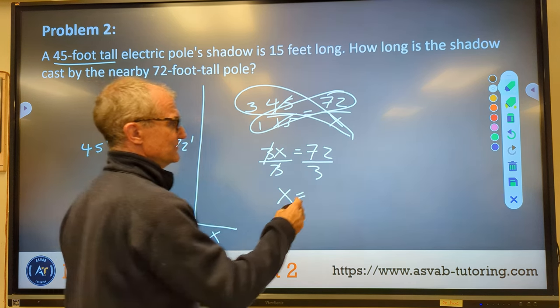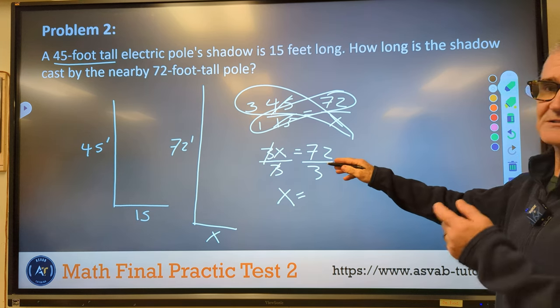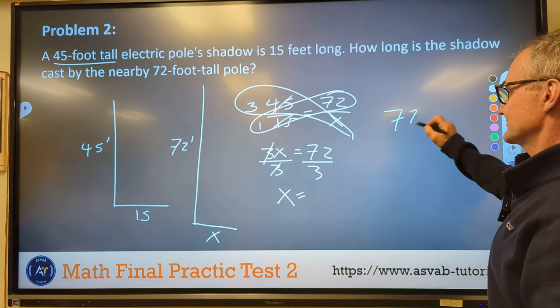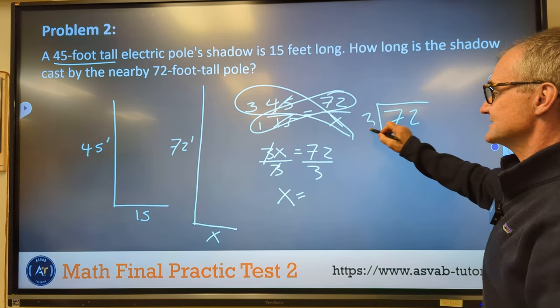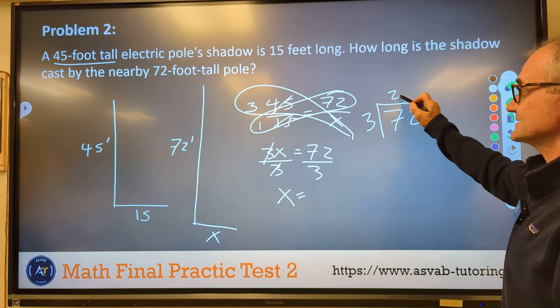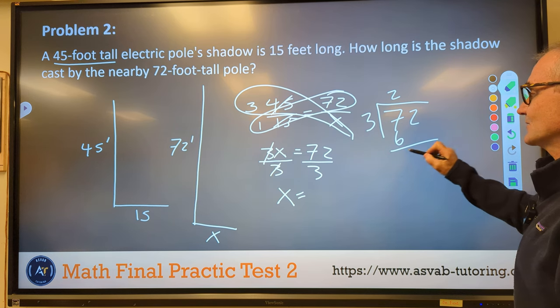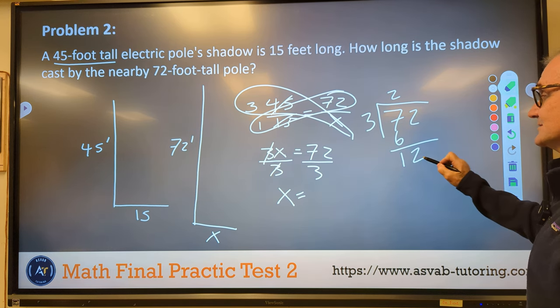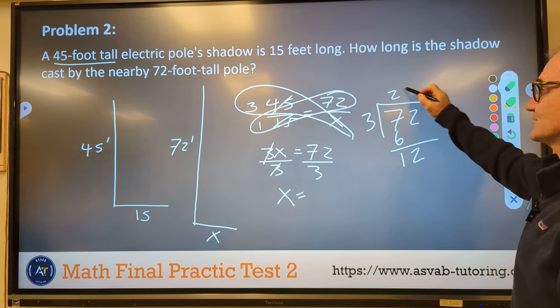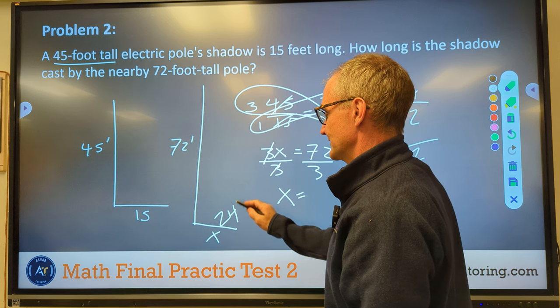72 divided by 3. I think I'll just divide it out. 3 goes into 7 twice, giving me 6. 7 minus 6 is 1. Bring down the 2. 3 goes into 12 four times. So if this is 72 feet, this is 24 feet.